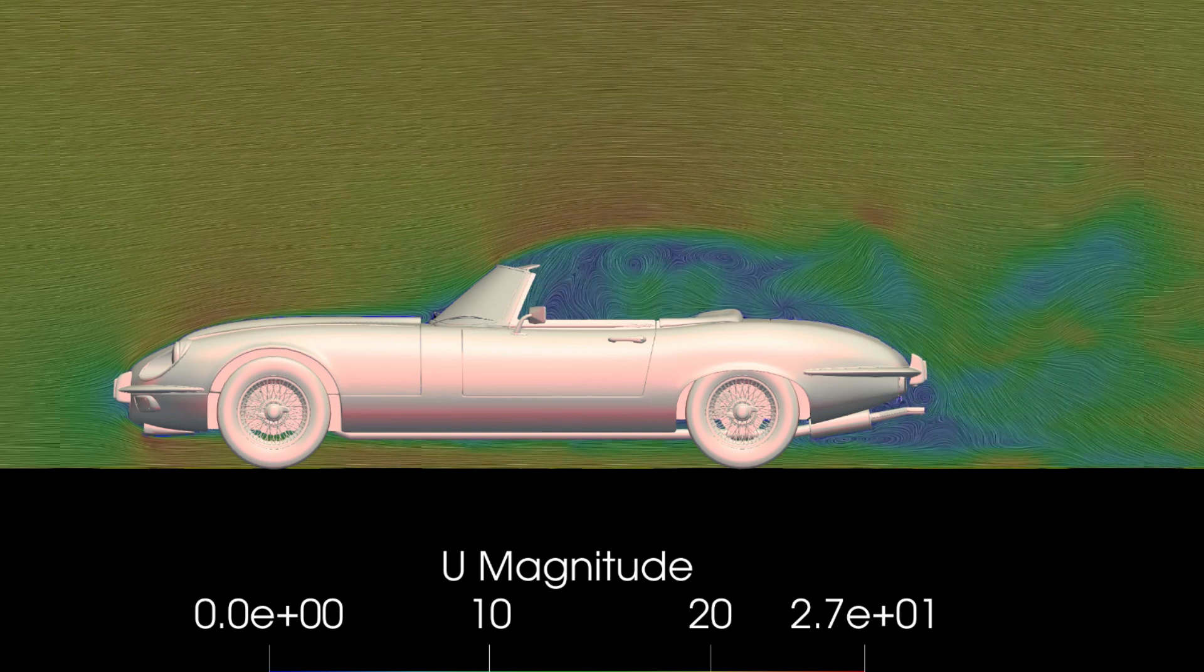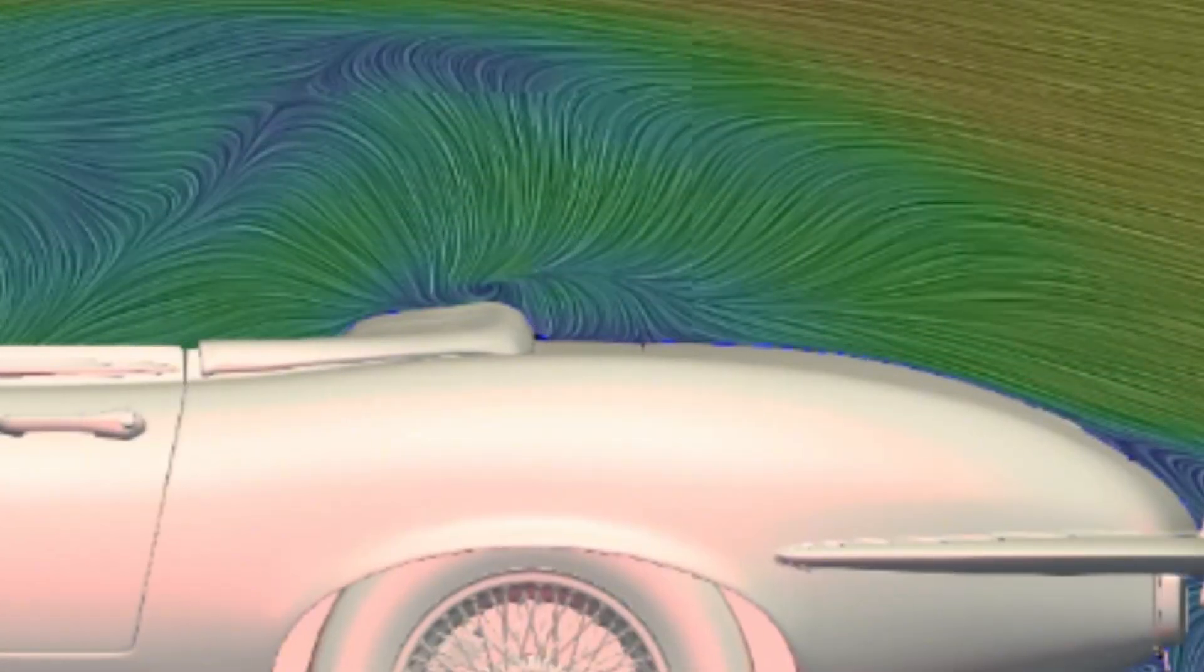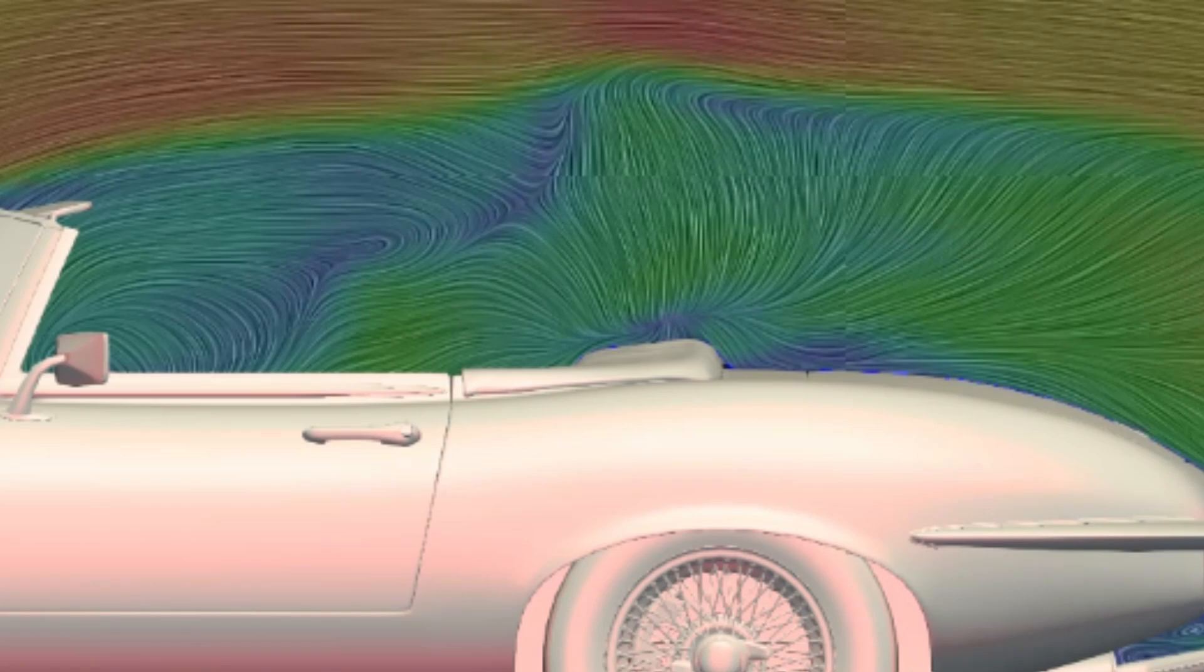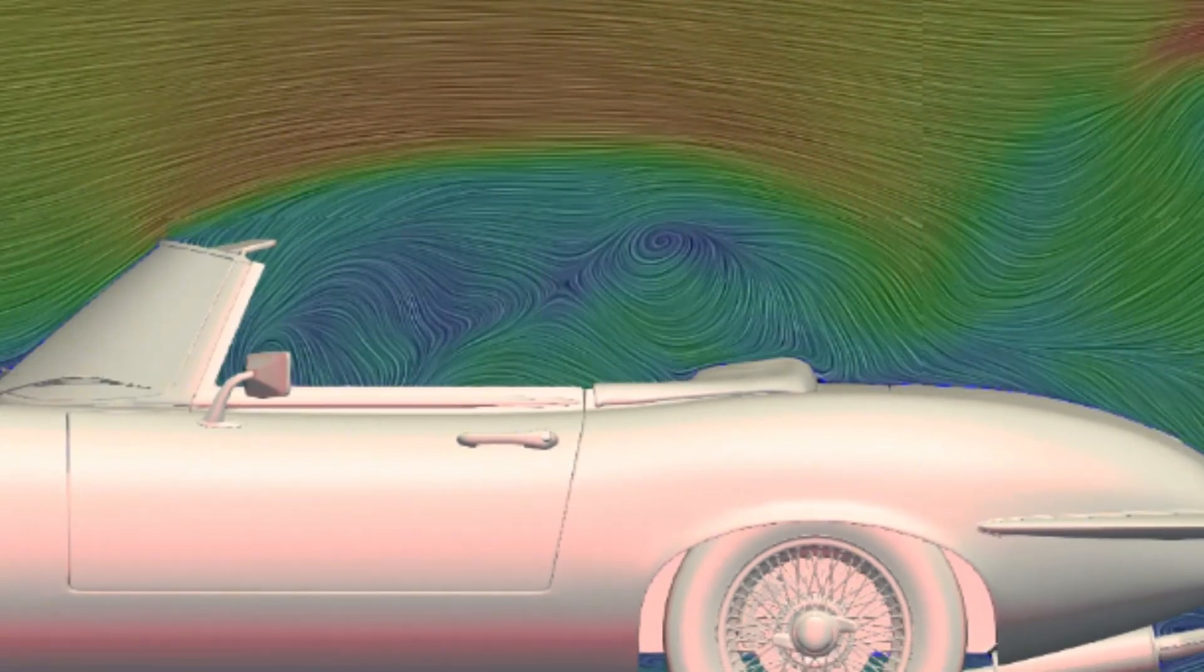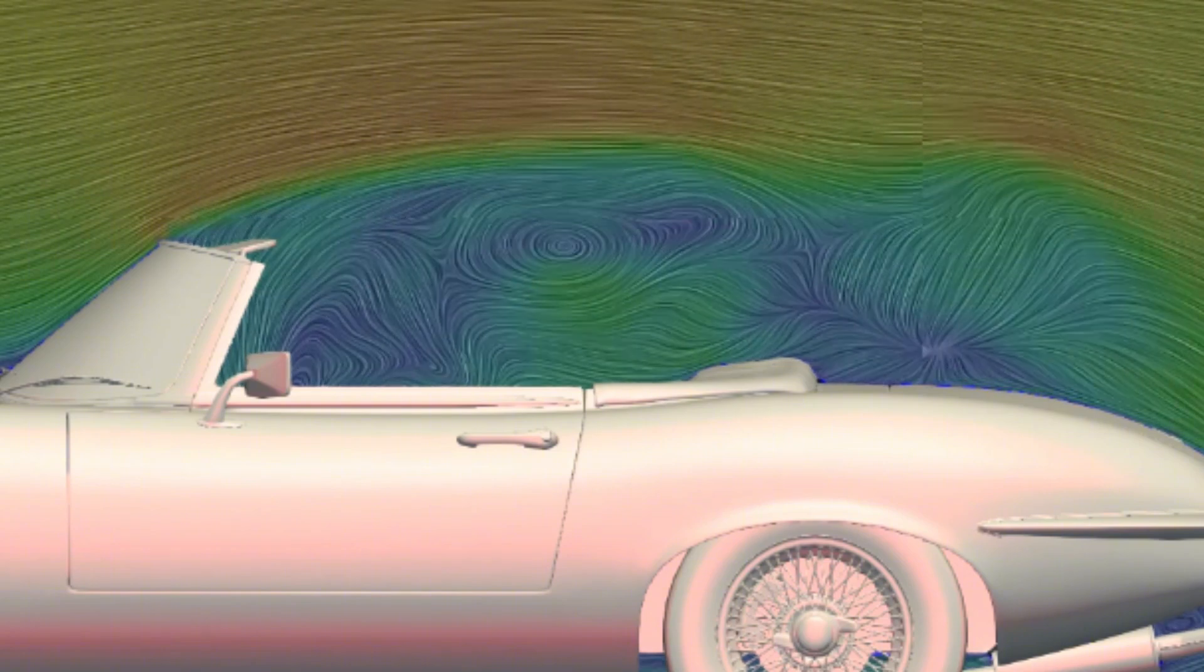One thing Jag could have done to reduce the wake over the back of the car is to raise the back up, so you effectively still have the rear window, but you've just cut off the roof. That way, the air has something to reattach to, and the wake would be smaller, and the drag would be much lower.